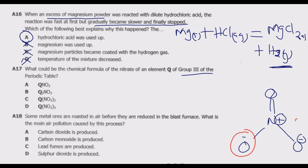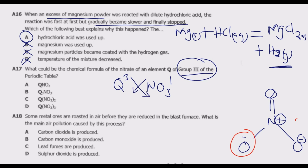So nitrate has a valence of 1. Because Q is a Group 3 element, Q has a valence of 3 — it is willing to lose three electrons to complete its outer shell. To find the formula we cross the valences: Q gets a subscript of 3 from the nitrate, and nitrate (NO₃) gets a subscript of 3 from Q, but since the nitrate subscript is 1 we ignore it. The formula is Q(NO₃)₃, so D is the correct answer.